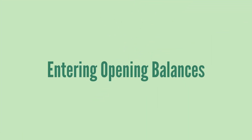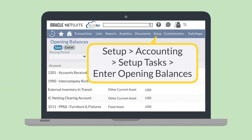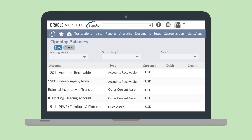Once you've created the list of accounts that will show up in your chart of accounts, you need to enter the opening balances for these accounts. To do this, navigate as the administrator to Setup > Accounting > Set Up Tasks > Enter Opening Balances. On this page you'll see all the accounts that do not yet have opening balances assigned to them. To set the opening balance for any of your accounts, select the correct posting period, subsidiary, and date. NetSuite will automatically populate the date field with the current day's date, but you can change it if you need a different day recorded alongside the opening balance. Then, in the list of accounts associated with your selected subsidiary, you will be able to enter either a debit or credit amount next to each account.